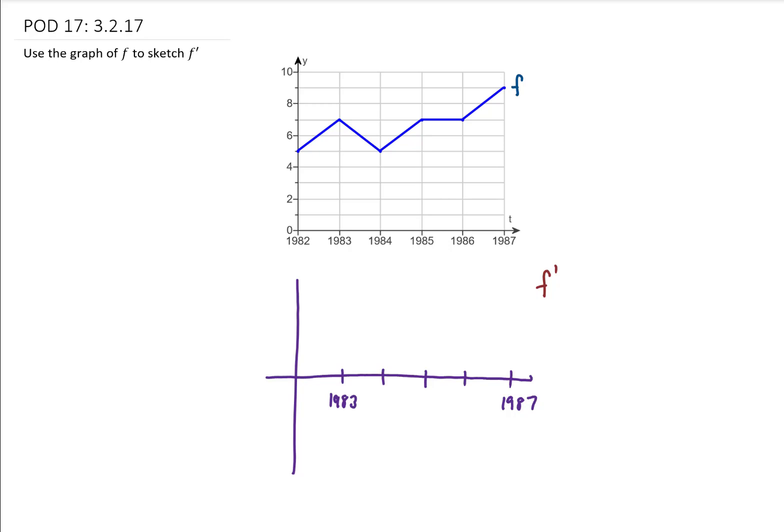what is the slope of this original function? So let's start right here, between 1982 and 1983. What is the slope of this function? Well, it looks like the y value changes from 5 to 7, and the x value changes from 1982 to 1983. That's a rise of 2 units and a run of 1 unit, so our slope is 2.